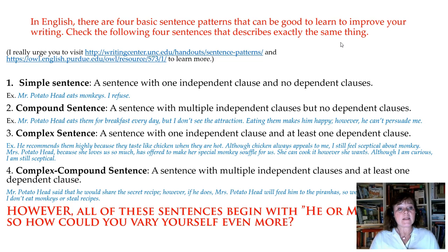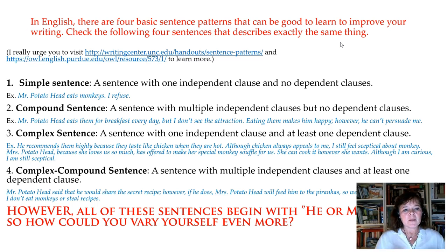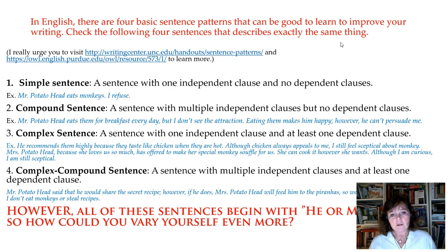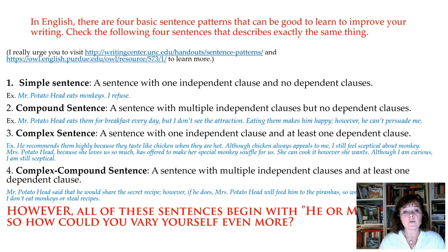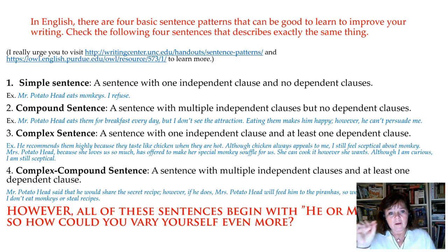A simple sentence: 'Mr. Potato Head eats monkeys. I refuse.' A compound sentence: 'Mr. Potato Head eats them for breakfast every day, but I don't see the attraction. Eating them makes him happy; however, he can't persuade me.' You see the sentence is longer and doesn't start with 'I refuse' — it says 'eating them makes him happy, however he can't persuade me,' so 'me' ends up at the end of a quite long sentence.